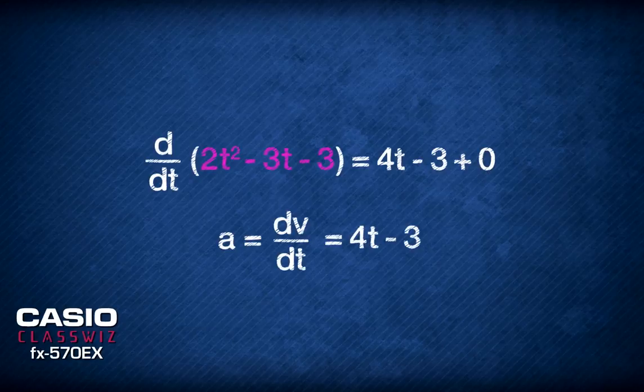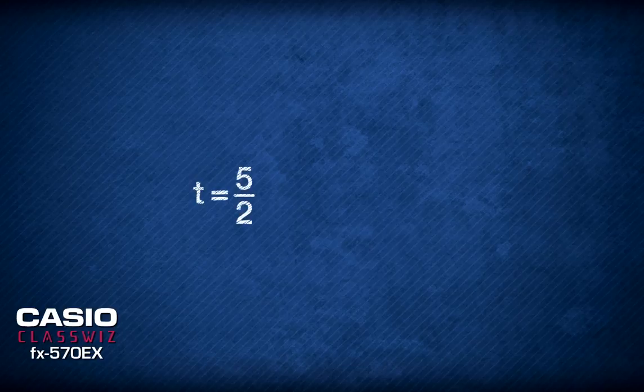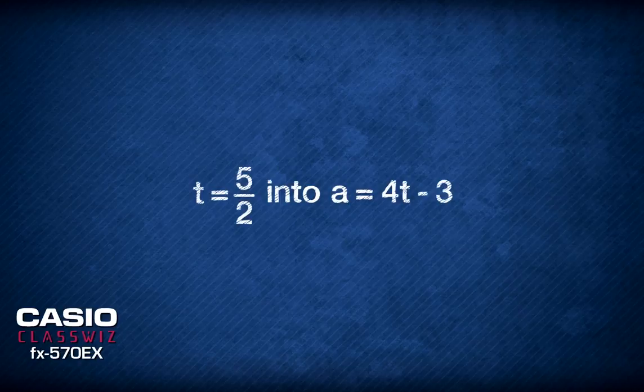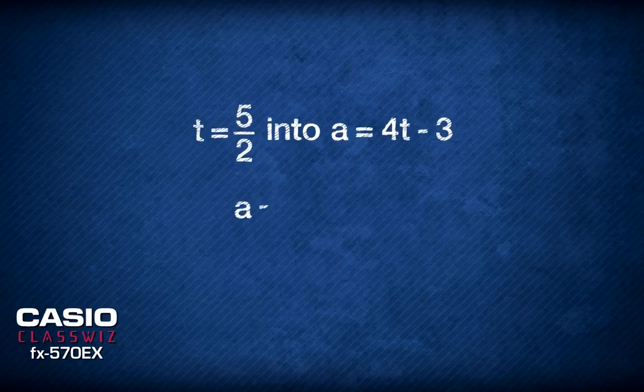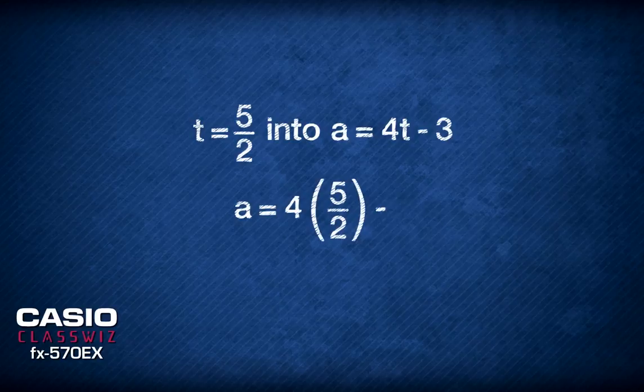Now, all we have to do is just substitute the value of t equals to 5 over 2 into the function of 4t minus 3 to find the acceleration at that time. Finally, solving for a tells us that the acceleration at that time is 7 meters per second squared.